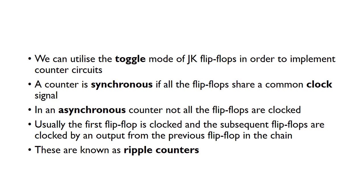We can utilize the toggle mode of JK flip-flops in order to implement counter circuits. A counter is known as a synchronous counter if all the flip-flops share a common clock signal, keeping them all in sync. In an asynchronous counter, not all the flip-flops are clocked directly by the clock signal — usually the first flip-flop is clocked by the clock and subsequent flip-flops are clocked by an output from the previous flip-flop in the chain. These are known as ripple counters because the clock signal ripples along the chain.